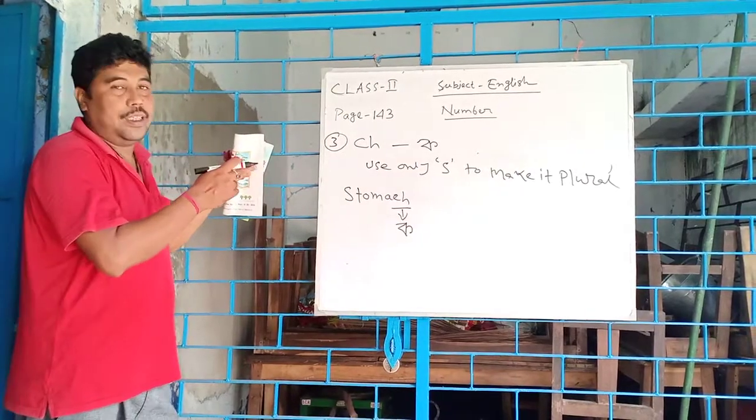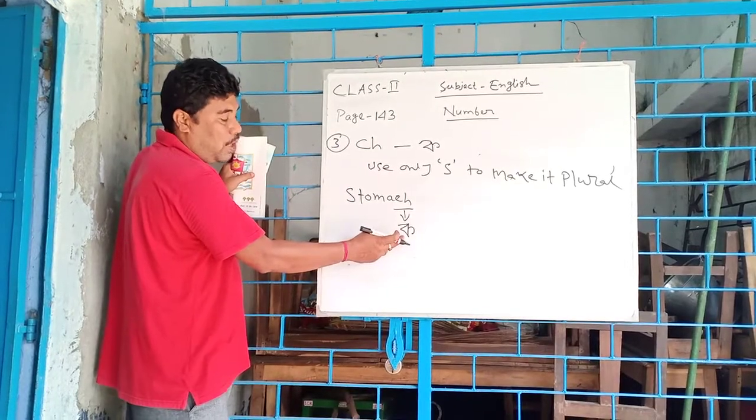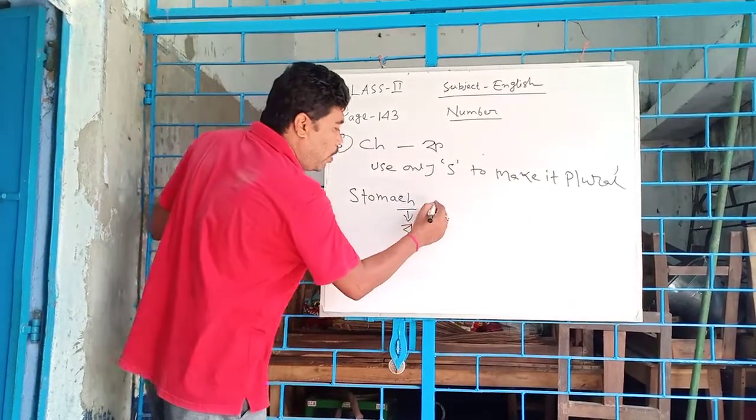If it is CH, then ES. But here it is K. The pronunciation is K. Therefore, to make it plural, we use only S.